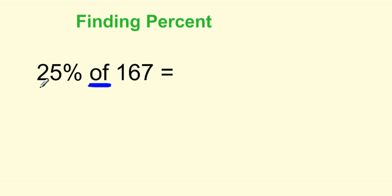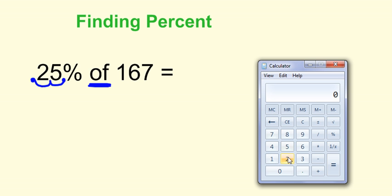Our first step is going to be to change this 25% to a decimal. So to do that, we are either going to move the decimal to the left two places, or if you wanted to put it into your calculator, you would always divide by 100. So 25 divided by 100 equals 0.25.